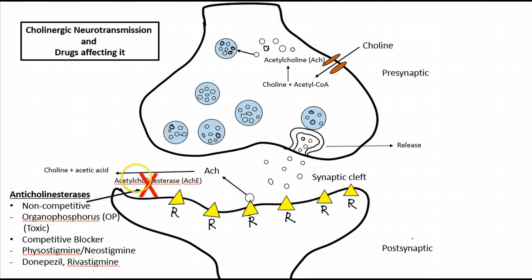Anticholinesterases bind to and inhibit the acetylcholinesterase enzyme. Their inhibitory action can be of two types: non-competitive inhibition, mainly caused by organophosphorus compounds and carbamates — toxic compounds used as insecticides and of mainly toxicological importance — and competitive inhibition, used in therapeutic practice. Examples of competitive anticholinesterases include physostigmine, neostigmine, donepezil, and rivastigmine, among others to be discussed in the next chapter.